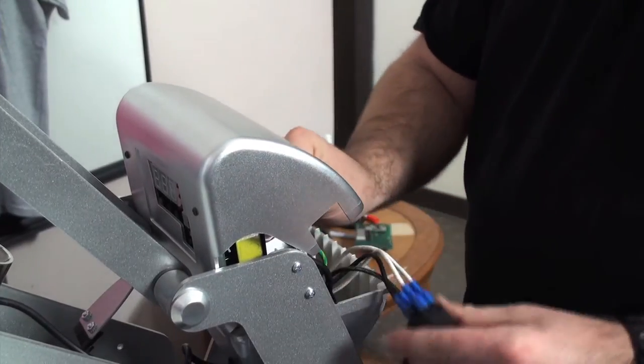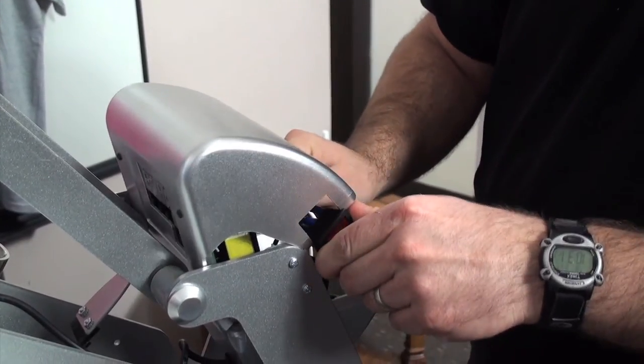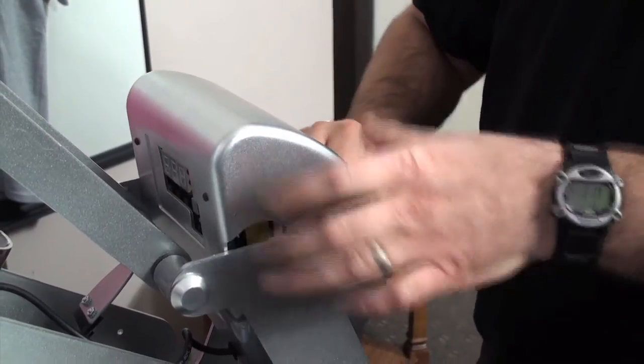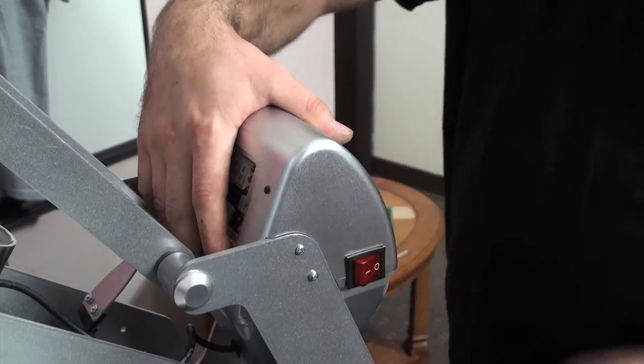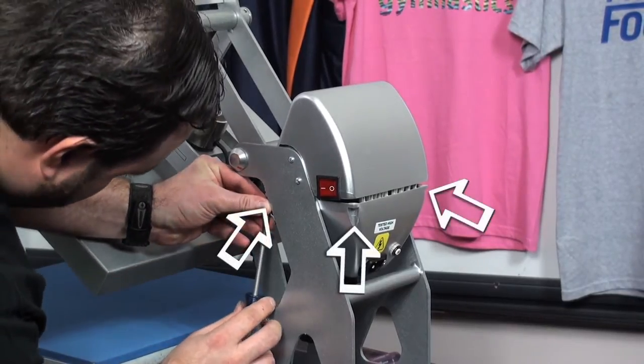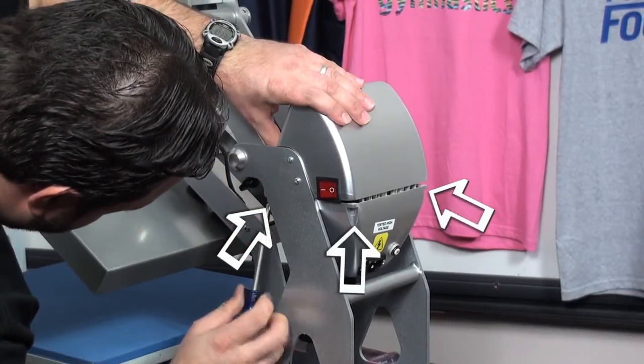Replace the housing cover on the housing unit, insert the on-off switch into its slot, and close up the housing unit. Secure the housing cover to the housing unit with the four screws removed earlier.